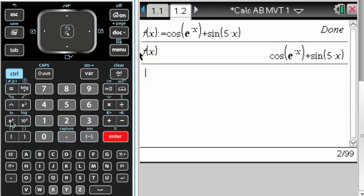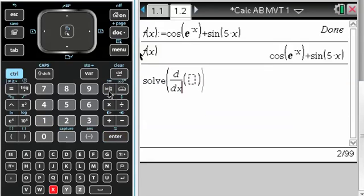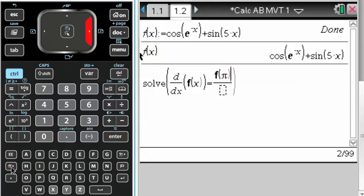And now what I'm going to do is I'm going to solve it a CAS way, so that's going to be menu 3, 1, and it's the derivative with respect to x of the function I just defined. So that's f of x, that has to be equal to the average rate of change, so that's f of pi minus f of 1 over pi minus 1.